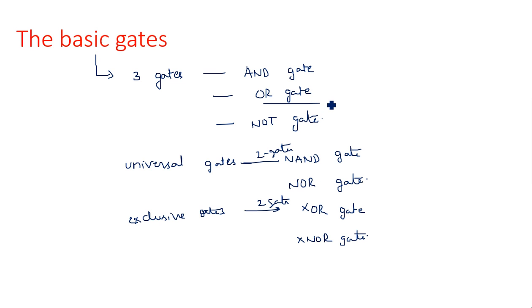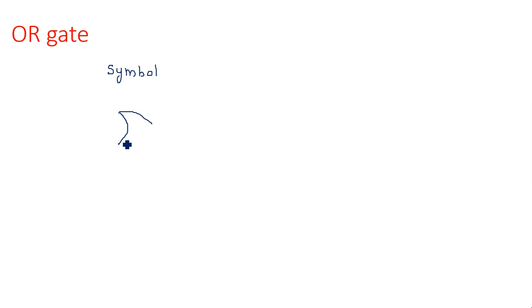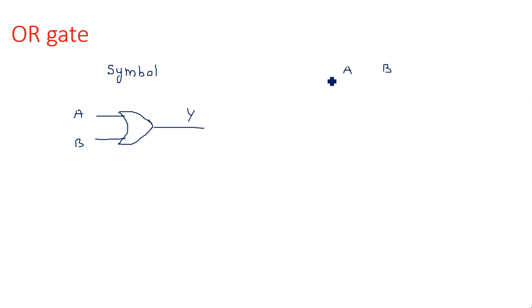Now, coming to OR operation — we are studying the OR gate completely. The OR gate has a symbolic representation showing two inputs A and B, and output Y. If we take the truth table of this two-input OR gate, A and B serve as inputs and Y serves as output.